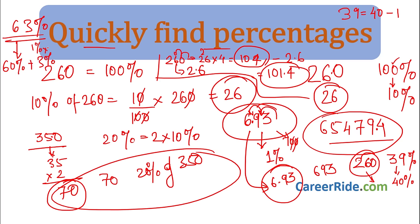Question 13: If 20% of an electricity bill is deducted, then rupees 100 is still to be paid. How much was the original bill? If 20% is deducted, 80% of the bill remains to be paid. So 80% of the original bill B equals rupees 100. B = 100 × 100/80 = 500/4 = rupees 125. The original bill is rupees 125.